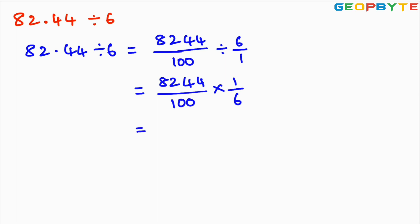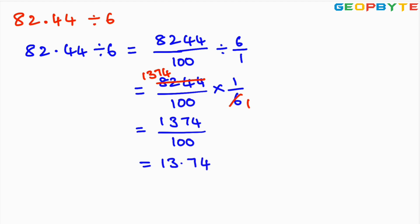Here 6 1374s are 8244, so we get 1374 divided by 100. We need to move the decimal point from right to left by 2 places and place the decimal point, giving us 13.74. The result of 82.44 divided by 6 is 13.74.